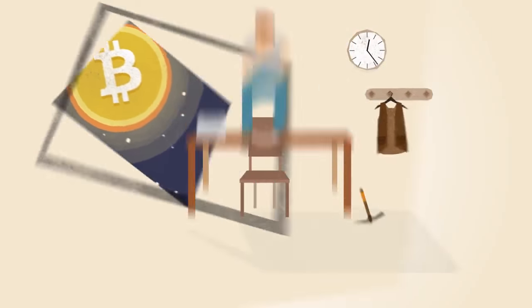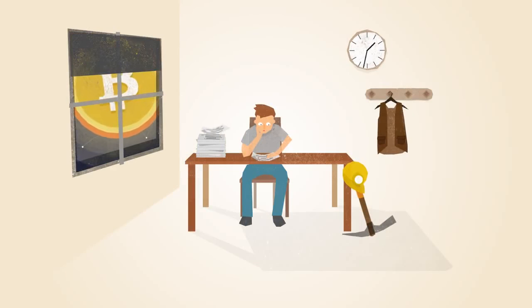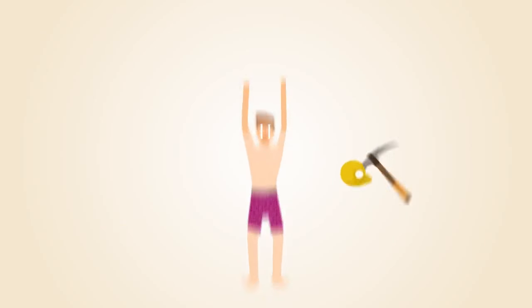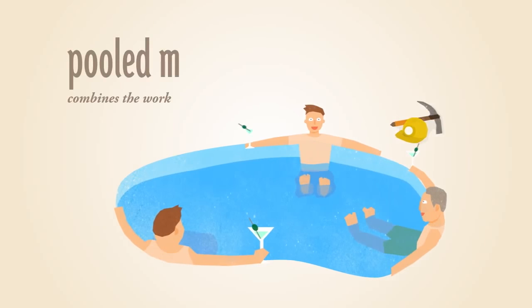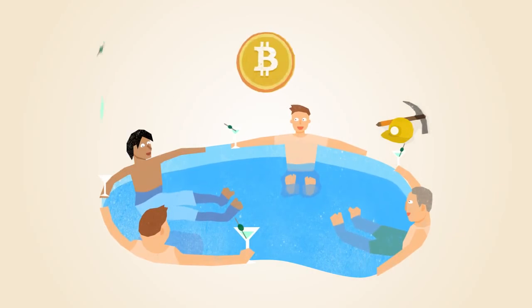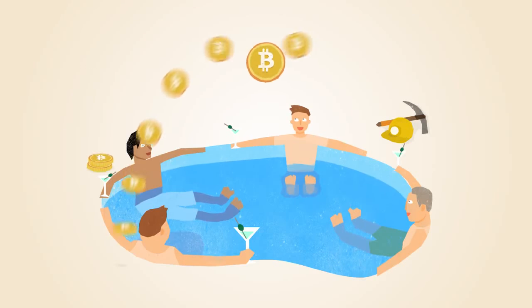As the popularity of Bitcoin increases, more miners join the network, making it more difficult for individuals to solve the math problems. To overcome this, miners have developed a way to work together in pools. Pools of miners find solutions faster than their individual members, and each miner is rewarded proportionate to the amount of work he or she provides.